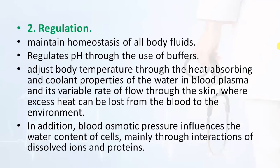Blood also transports heat and waste products to various organs for elimination from the body. Regulation: Blood maintains the homeostasis of all body fluids, regulates pH through buffers, and adjusts body temperature through the heat-absorbing and cooling properties of water in blood plasma and its variable rate of flow through the skin, where excess heat can be lost to the environment. Blood osmotic pressure influences the water content of cells through interactions of dissolved ions and proteins.